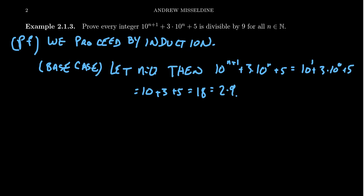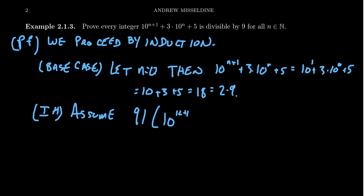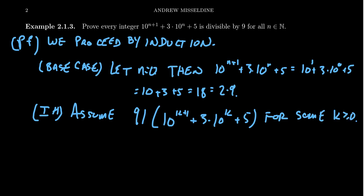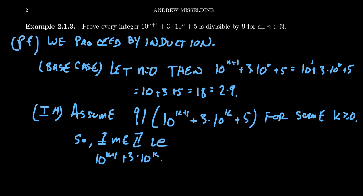We've finished the base case, so we move on to the inductive hypothesis. We assume that 9 divides 10^(k+1) + 3·10^k + 5 for some k ≥ 0. In other words, there exists some integer m such that 10^(k+1) + 3·10^k + 5 = 9m. We'll use this explicit multiple in what follows.